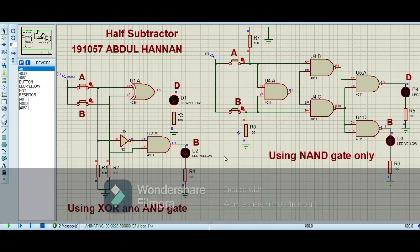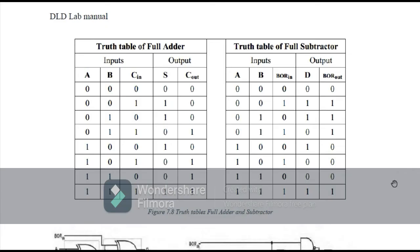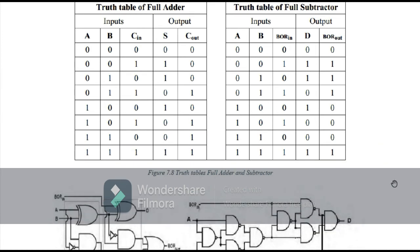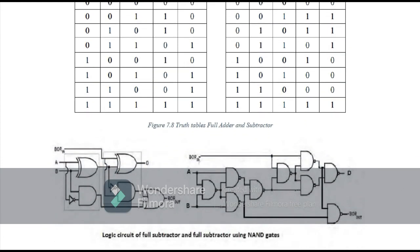By using this technique we can easily make the circuit of a half subtractor and check the truth table using simulation. For the full adder and full subtractor, we have 3 inputs and 2 outputs. For the full adder we have inputs A, B, and carry-in, and outputs sum and carry-out. When inputs are 0,0,0 the sum is 0 and carry-out is 0; when inputs are 0,0,1 the sum is 1 and carry-out is 0, and so on.